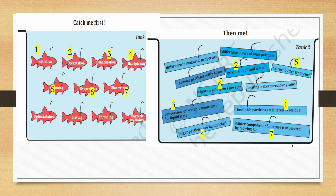Winnowing: lighter components of a mixture are separated by blowing air. Sedimentation: heavier particles settle down. Sieving: difference in size of solid particles. Threshing: beating stalks to remove grains.